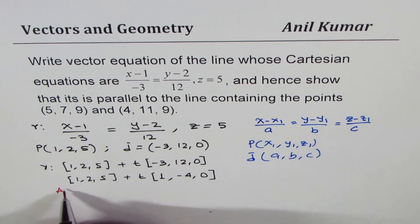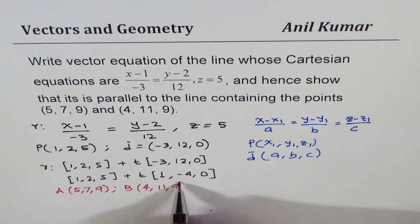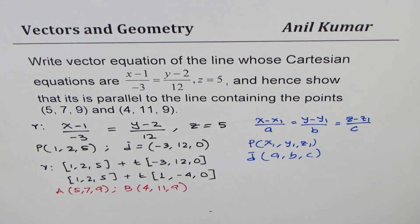So let's say the points are A, which is (5, 7, 9), and B is (4, 11, 9). So what is the direction between these two?